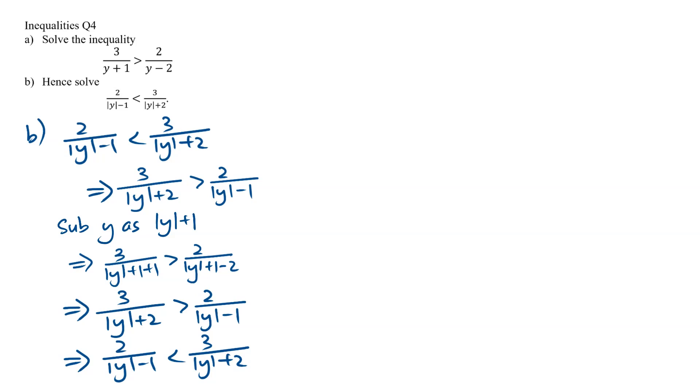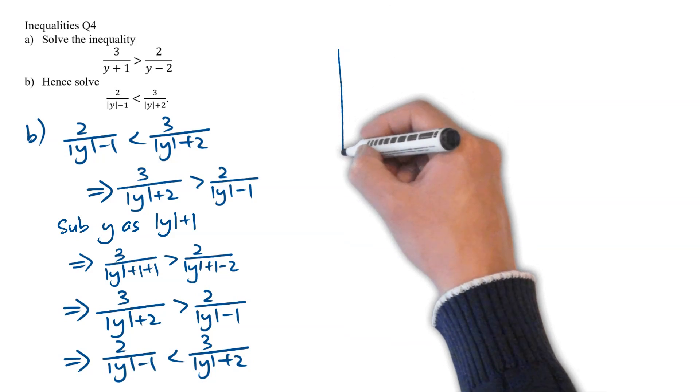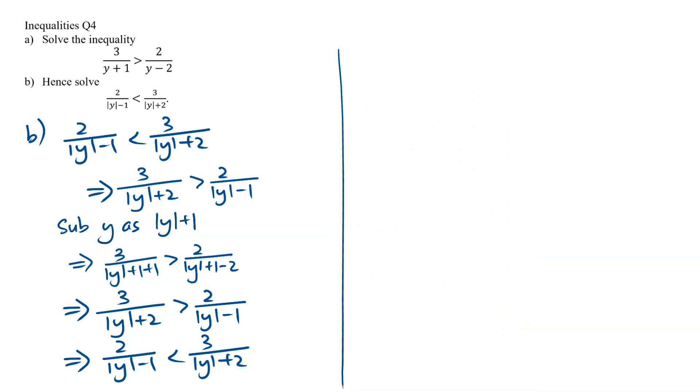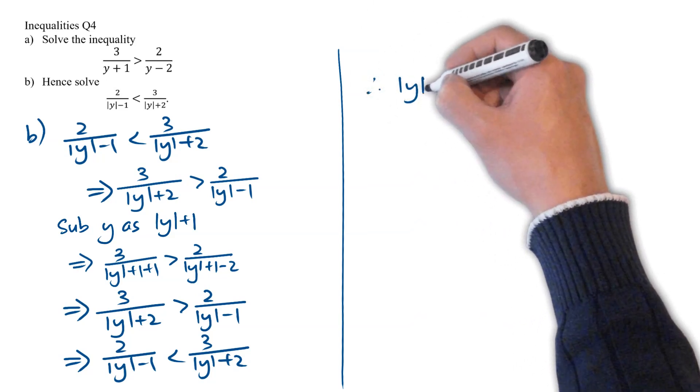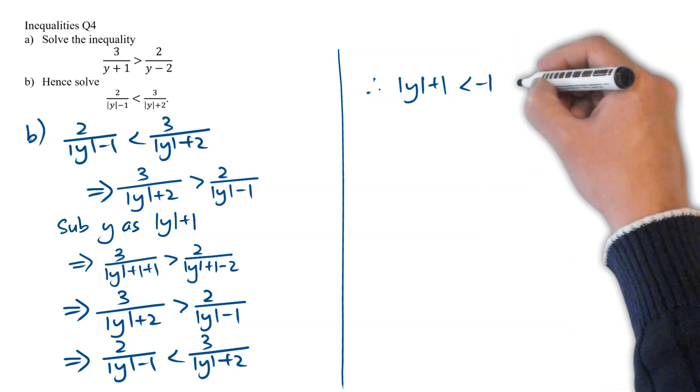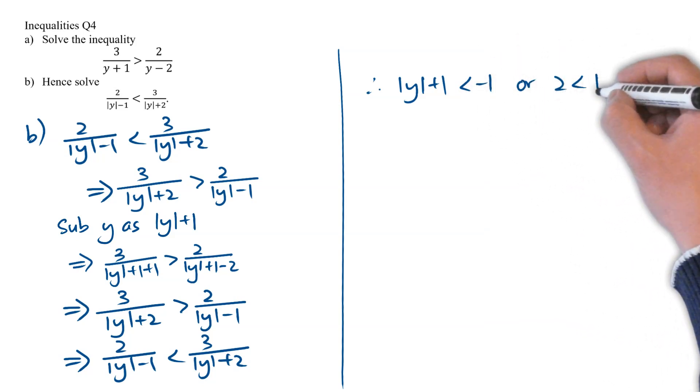And therefore, we know that substituting y as mod y plus 1 is the correct substitution to be used. And therefore, we can now substitute y as mod y plus 1 in our solution from part A, to get mod y plus 1, less than negative 1, or mod y plus 1 between 2 and 8.